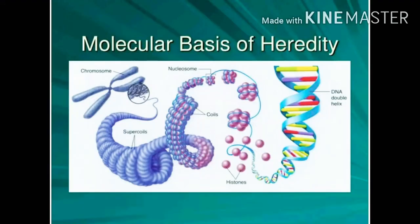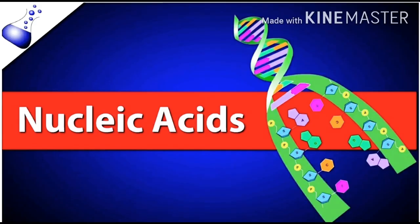In this chapter of Molecular Basis of Inheritance, you have to study about nucleic acid, DNA replication, RNA synthesis, and protein synthesis. First of all, nucleic acid — you have already studied about nucleic acid in 11th class in the chapter biomolecules.